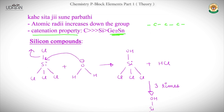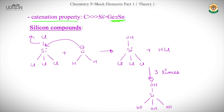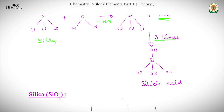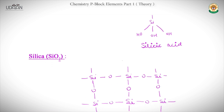Now we move to important Silicon compounds. SiCl₄ reacts with water: H₂O attacks and Cl leaves. Each Cl is substituted by an OH group, and after three such substitutions we get Si(OH)₄, which is called silicic acid.